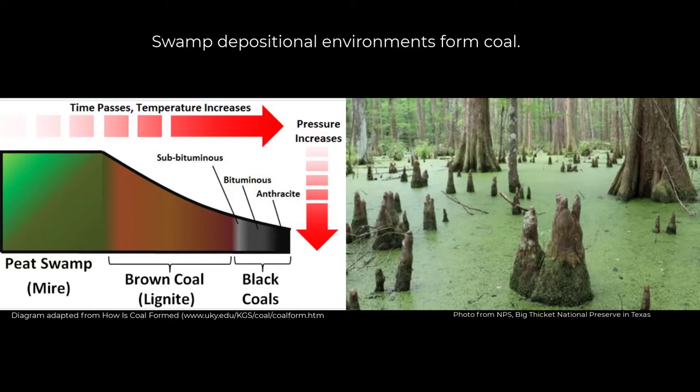Swamp environments like you see here for Big Thicket National Preserve in Texas start off as peat, which is an organic mud. Over time it can be literally metamorphosed by pressure and heat into a low-grade coal called lignite. With more pressure you get sub-bituminous, then bituminous, and then anthracite, which is the highest grade coal. The higher the pressure and temperature, the more organic volatile material is burned off, so it burns more cleanly and typically has a higher energy BTU concentration.